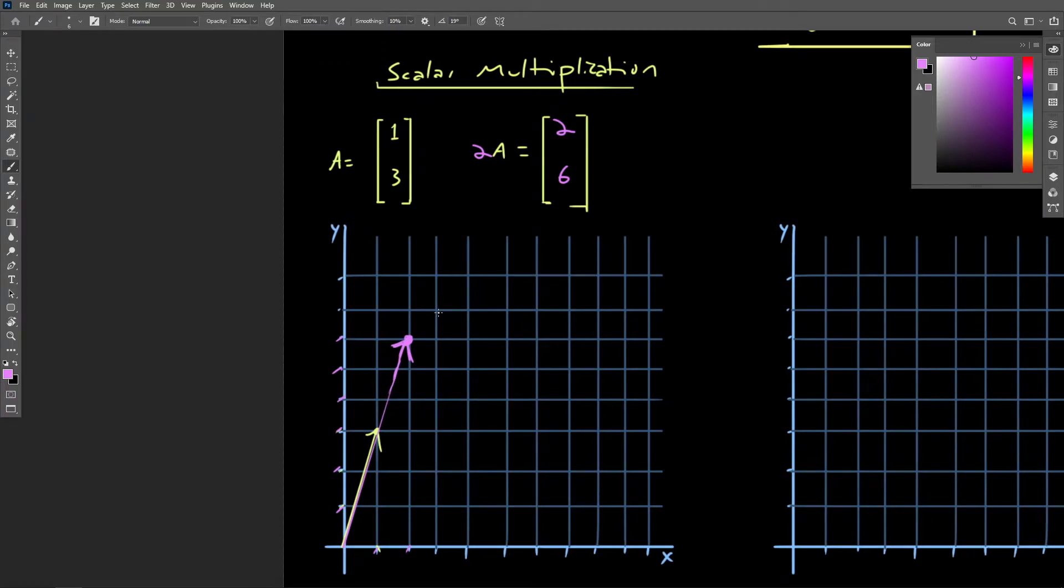It's interesting to note that negating a vector, that is multiplying it by negative 1, reverses its direction.